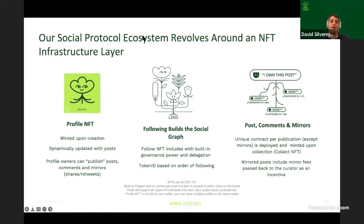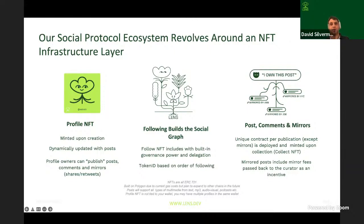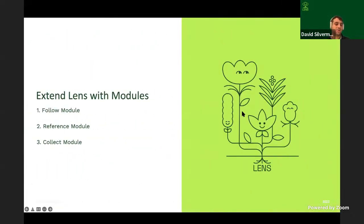There's a question about why we only made profile and follow NFTs, as opposed to one for each publication. A publication can turn into an NFT if it's collected. The idea is that all publications live inside the profile — the profile is your entire feed and all your publications are there. We don't want NFTs owning other NFTs, but we allow publications to be minted into standalone NFTs using a thing called a collect module. This flows really well into how you can extend Lens at the smart contract level.